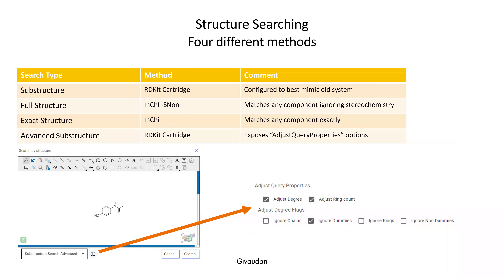For structure searching, we use the default substructure search from the Artkit, configured to best mimic the old system. Full structure search uses the InChI without stereochemistry — exactly how the duplicate check works. The exact structure search works the same except stereochemistry is taken into account. For advanced users, there is an advanced substructure search that exposes different Artkit query properties, which can be used for more fine-grained searches.